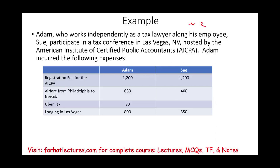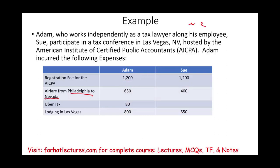Adam paid the registration fee for the AICPA conference: $1,200 for himself and $1,200 for Sue, his employee — it's a three-day conference. They flew from Philadelphia to Las Vegas, Nevada: Adam paid $650, Sue paid $400 — maybe he traveled first class and Sue traveled regular class. Uber from the airport to the hotel was $80. Lodging in Las Vegas: Adam paid $800, Sue paid $550. They may have stayed in different hotels or Adam upgraded. We will assume all these amounts are reasonable.